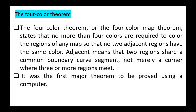The four color theorem, or four color map theorem, states that no more than four colors are required to color the regions of any map so that no two adjacent regions have the same color. Adjacent means two regions share a common boundary curve segment, not merely a corner where three or more regions meet. This theorem was the first major theorem to be proved using a computer, though initially this computer proof was not widely accepted by mathematicians.